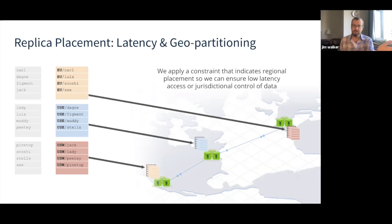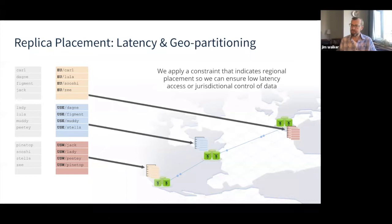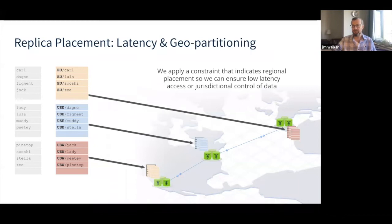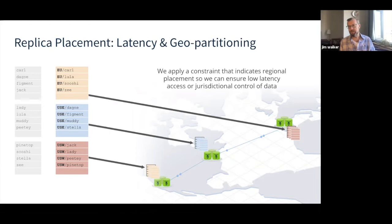Not only can you define this partitioning when you create the table — you can do this in production via online schema changes. You can change a schema including the primary key without taking the database down. Say I lost a region and want to move all those records to a different set of nodes: I do an ALTER TABLE, and CockroachDB moves all the data around automatically. If I bring up a new Africa region, I just alter the table, add the new nodes, and the database handles moving the data. No manual resharding, no downtime.